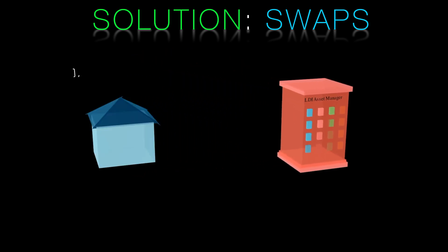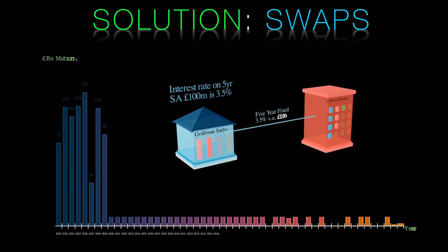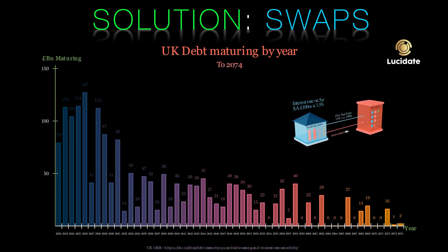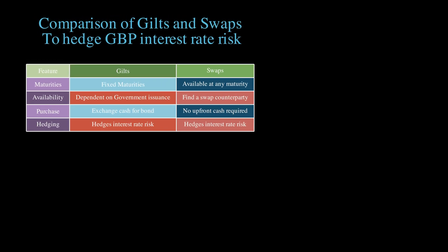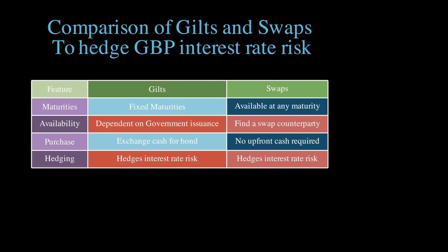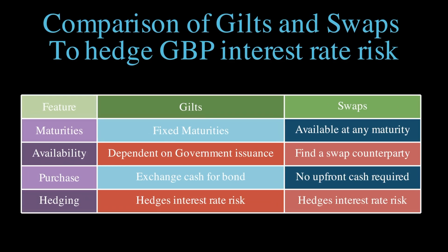To find out more about interest rate swaps, there is a link in the description and a card appearing on your screen for Lucidate videos on the subject. Swaps are individually negotiated contracts and very liquid — you can easily find a swap counterparty to trade in any maturity, so there are no scarcity issues as there are with government bonds. Also, gilts require you to purchase the gilt for cash. As a pension fund, you want the interest rate hedging capabilities of the gilt, but you'd rather use the cash to invest in higher yielding products like equities. There's also a liquid market in inflation swaps, meaning all the advantages of interest rate swaps — hedging risk, availability at any maturity, and not having to tie up capital — are also there for inflation too.